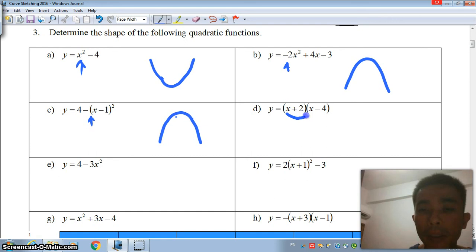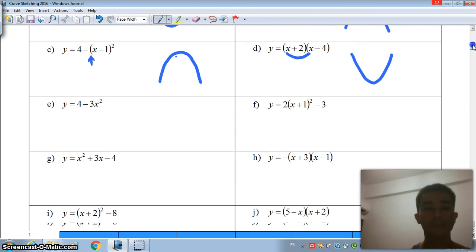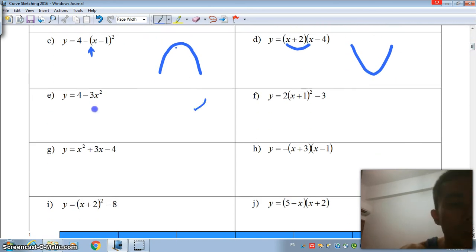Part D, x multiplied by x will give us a positive x-square. Your guess is as good as mine. Moving on. This is a negative 3x-square. So, very obvious. We will have an n-shape.